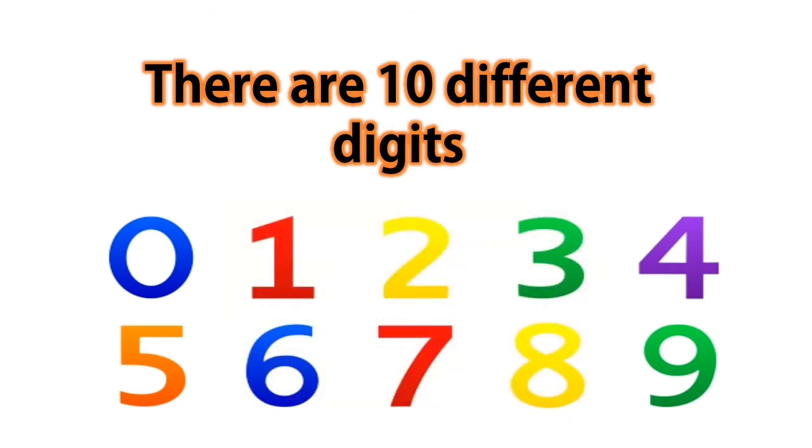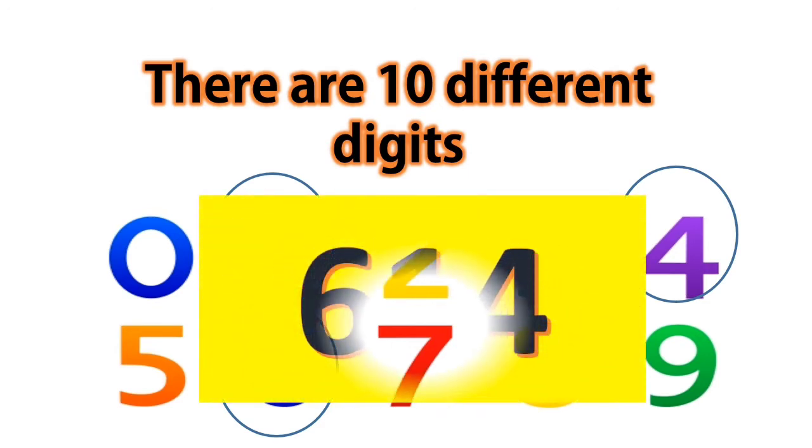Let us take another number: six, one, and four. Together, these three digits are making the number six hundred and fourteen. So, this number is made up of three different digits.